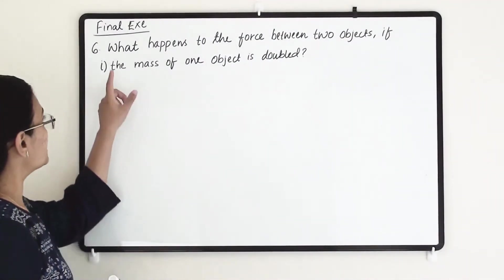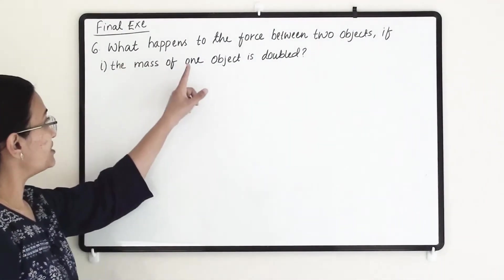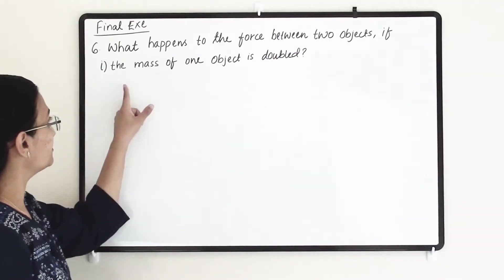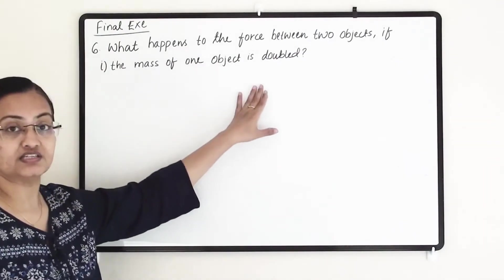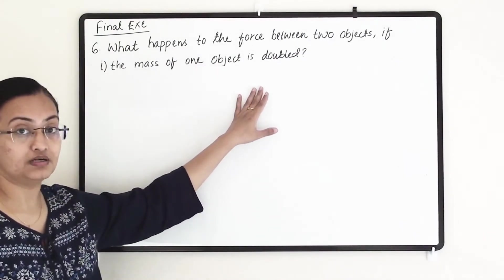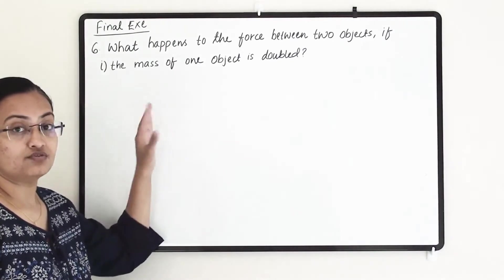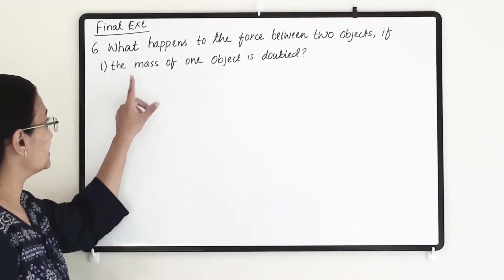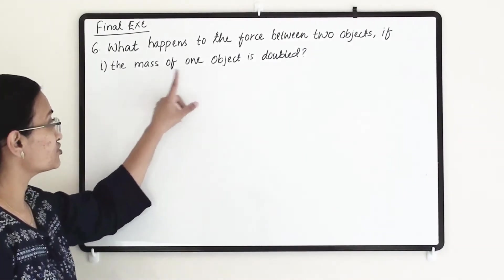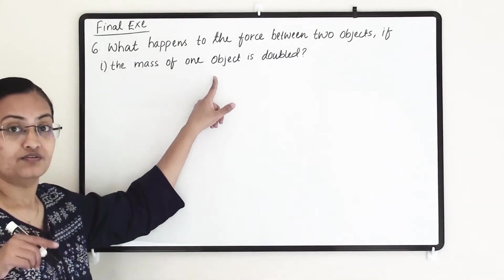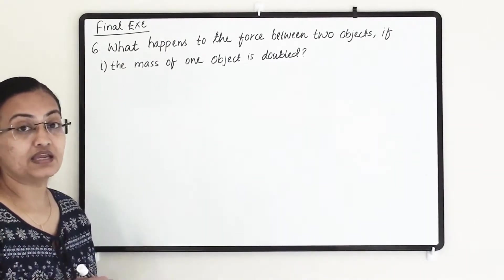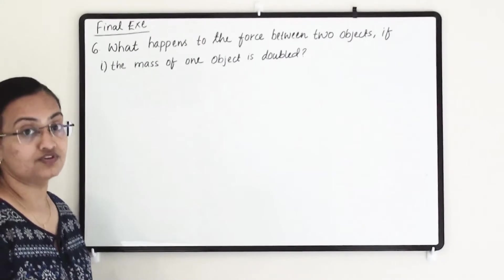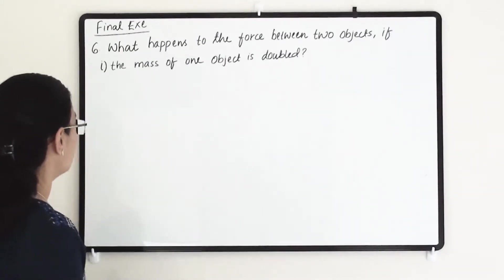Our sixth question is: what happens to the force between two objects if the mass of one object is doubled? We have to discuss three different cases. In the first case, we are making the mass of one of the objects double, and we need to find what will happen to the force acting between them.